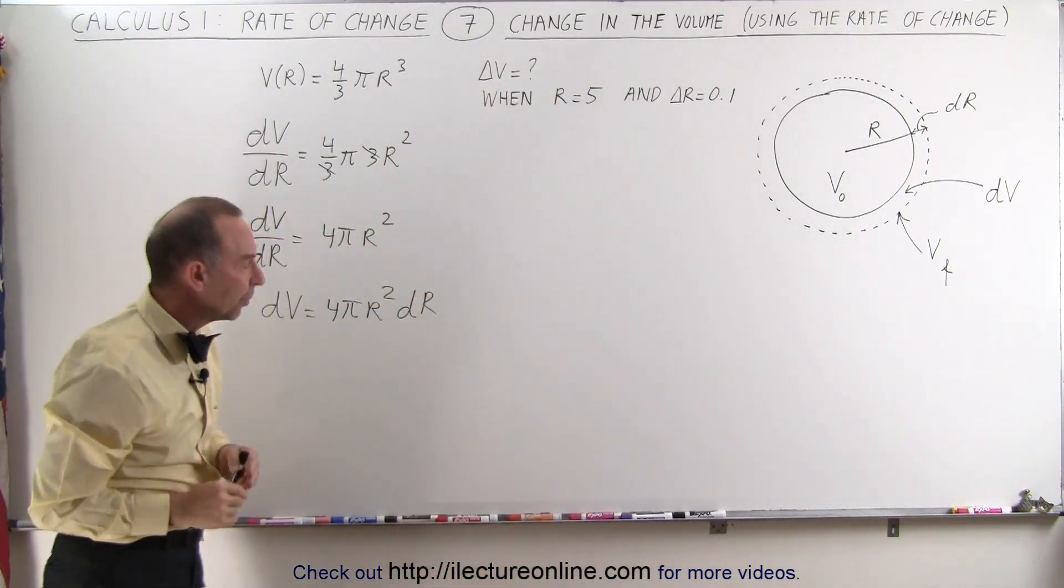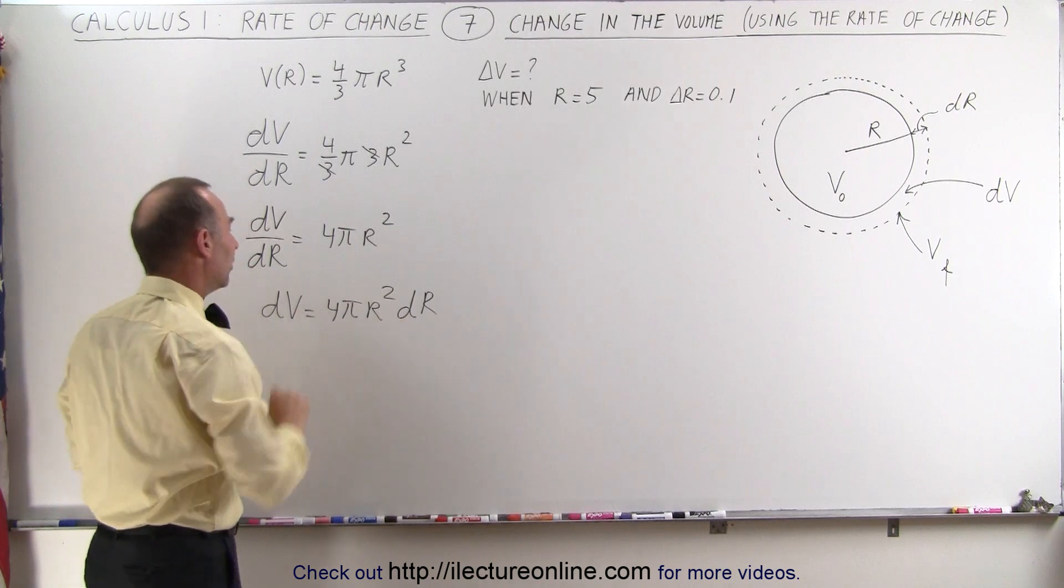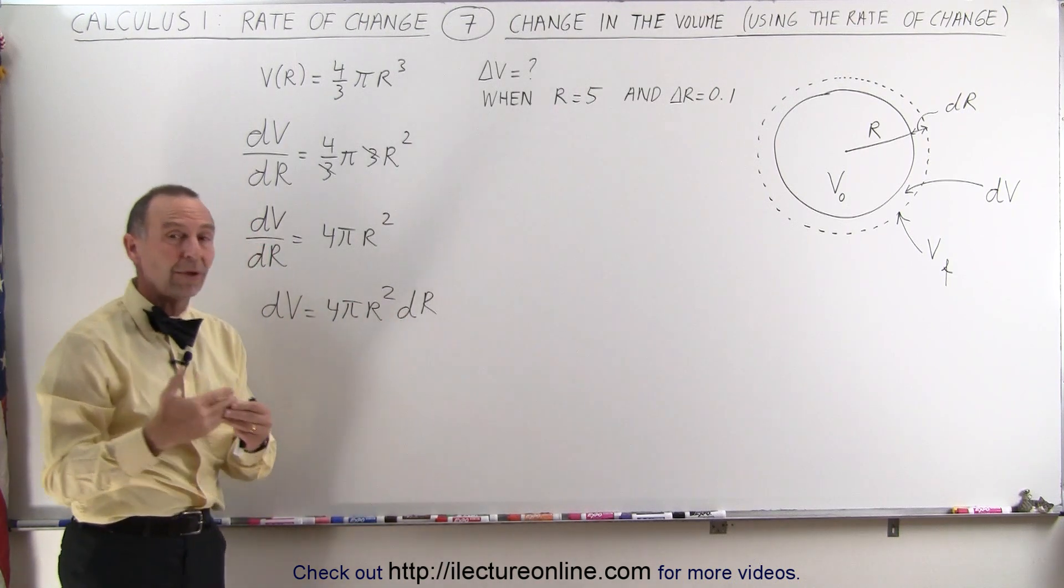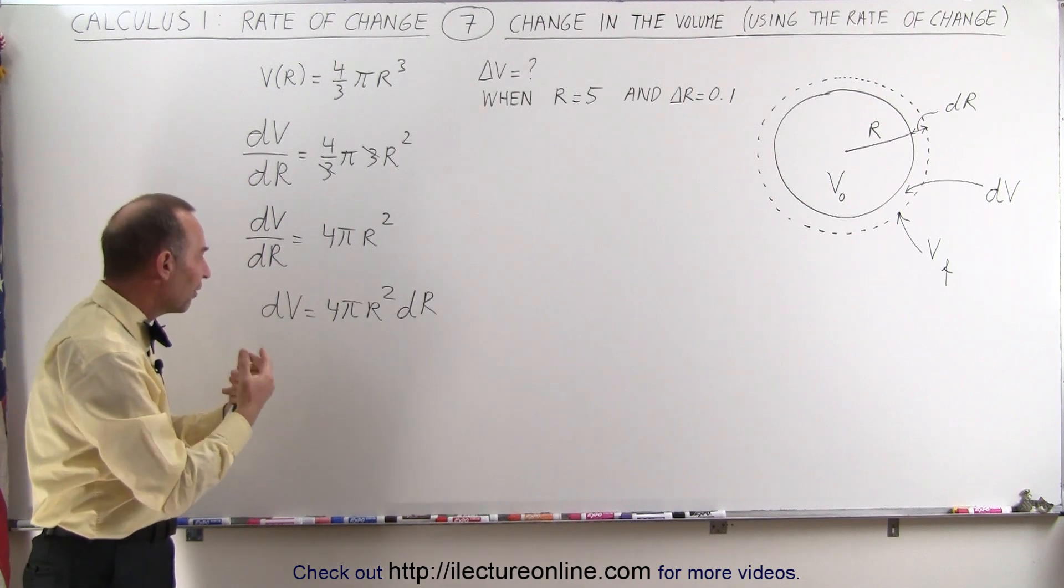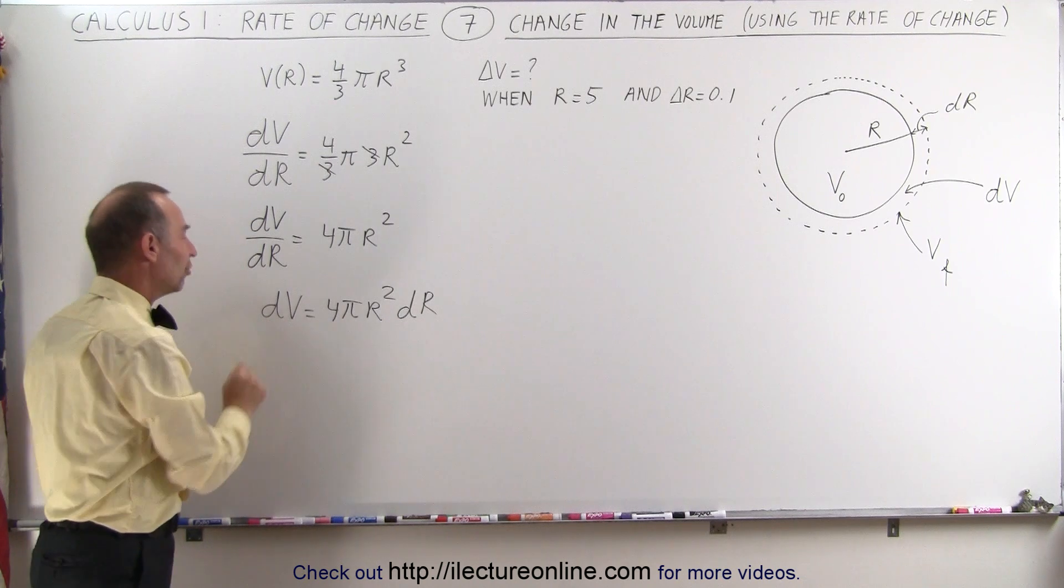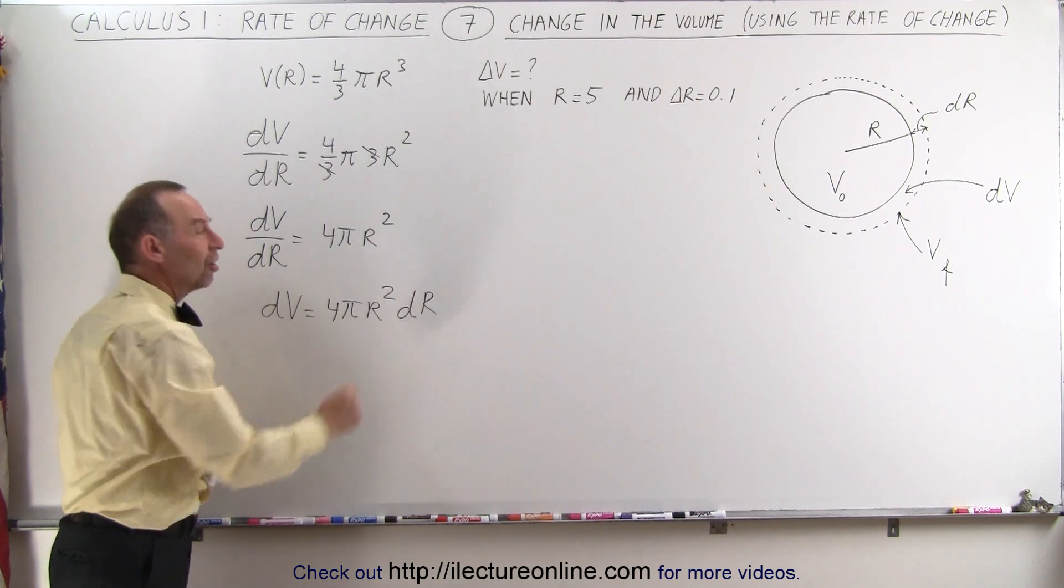So when do we use the delta symbol, and when do we use the d symbol? The dV and the dr here really is meant for a very, very small, infinitesimally small little change, a very tiny change in the volume and a very tiny change in the radius.